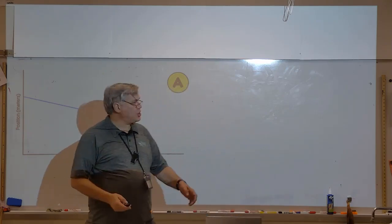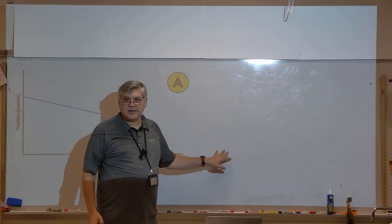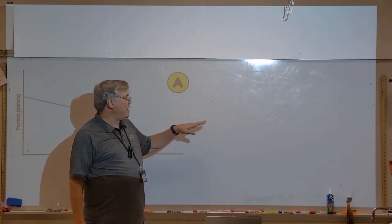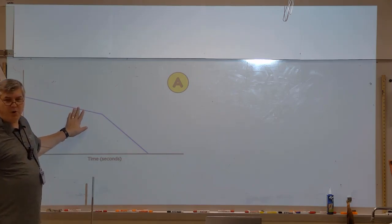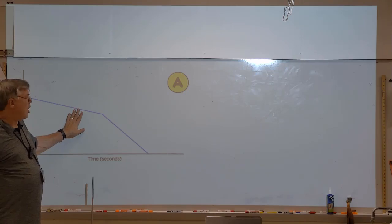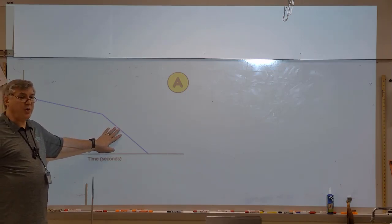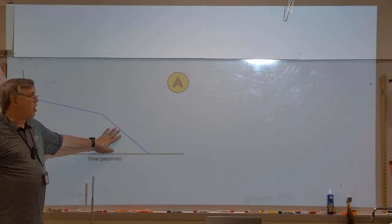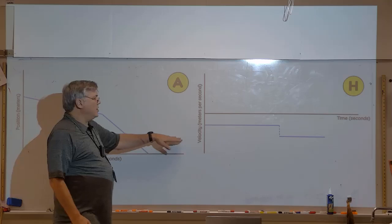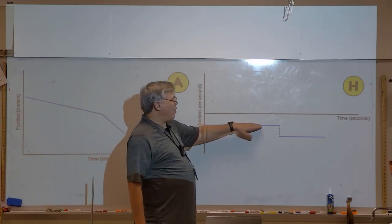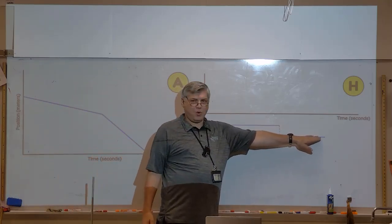So how will this show up on a velocity time graph? Will this be a line above the zero or below? Below. And what about this one? Below closer to zero or farther from zero? Right.